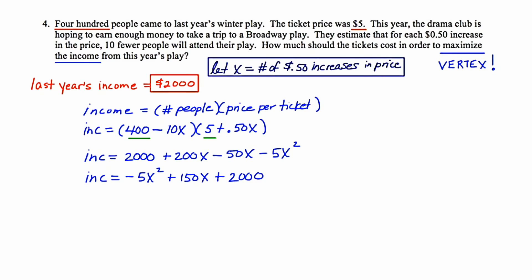Now I'm going to identify a, b, and c, and place these values in a cubby. A is negative 5, b is 150, and c is 2000.